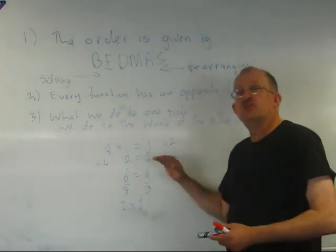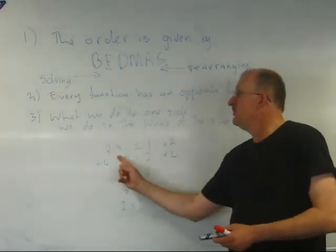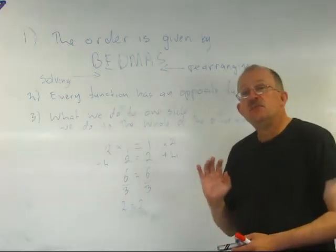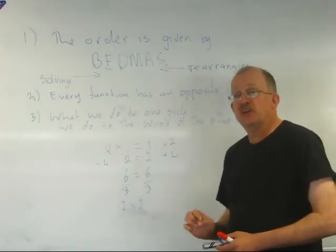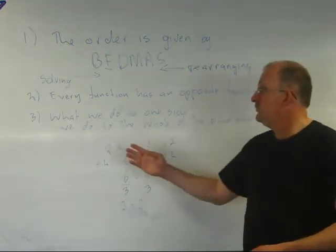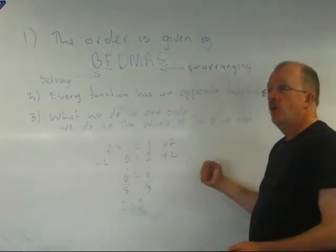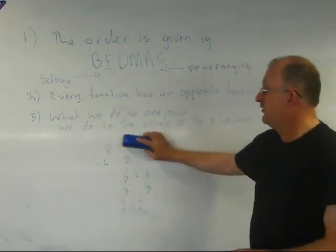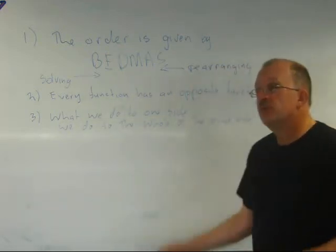So what this is trying to show, what I'm trying to show here, is if we do this to this whole side as well, then mathematically it's going to stay true or stay correct. So what we do to one side, we must do to the whole of the other side. So those are the three rules of rearranging equations.